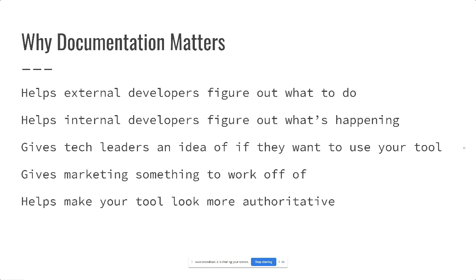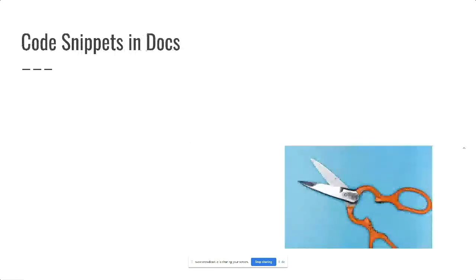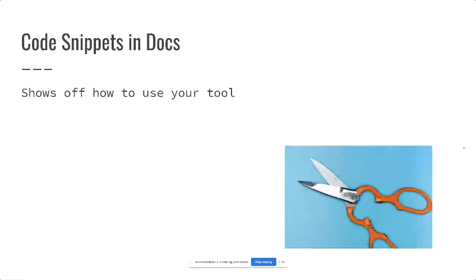You want to make sure that anybody who comes by your website is able to look at your tool and say, 'Oh, that doesn't seem too hard.' That's where code snippets in the docs come in — they show off how to actually use your tool. A developer sees docs and, yeah, it's great if there's a lot of words, but we want to know how does that code work? When we go to integrate your tool in our code base, how does that look? Do we have to import it, download something, call an online function?